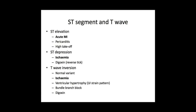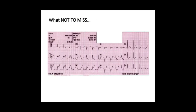T wave inversion can also result from ventricular hypertrophy — for example, left ventricular hypertrophy — resulting in what's classically called the strain pattern, where you get larger voltages in the chest leads alongside T wave inversion. It can also occur as a result of bundle branch block — and remember, if you find left or right bundle branch block in the ECG, you can't really say anything about the ST segments or T waves. It can also occur as a result of digoxin.